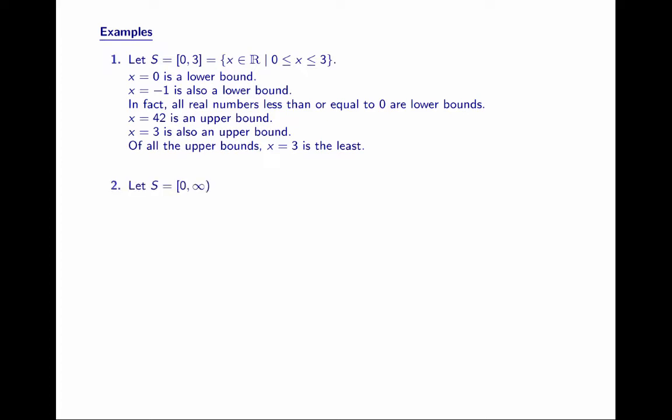Let S be the set closed interval 0 to open interval infinity — that is, the set of all numbers greater than or equal to 0. 0 is less than or equal to all elements of my set, so of course 0 is, by definition, a lower bound. There is no upper bound.